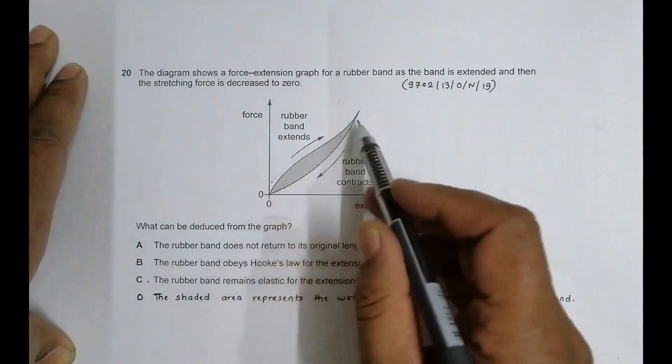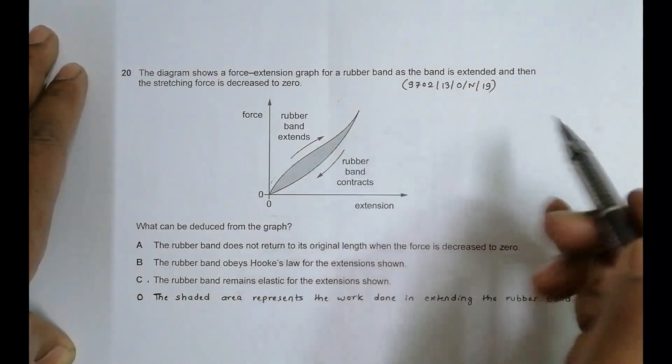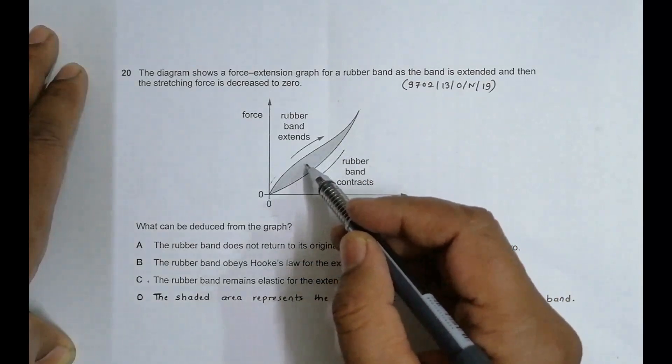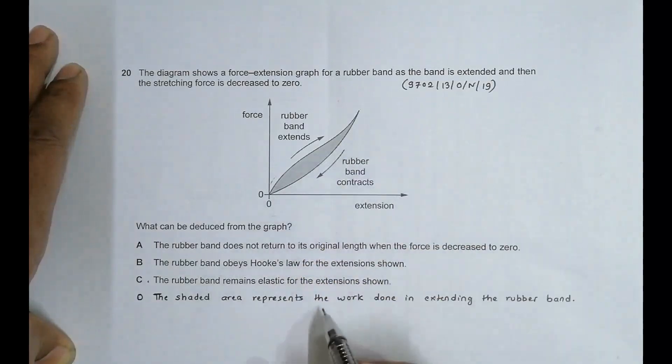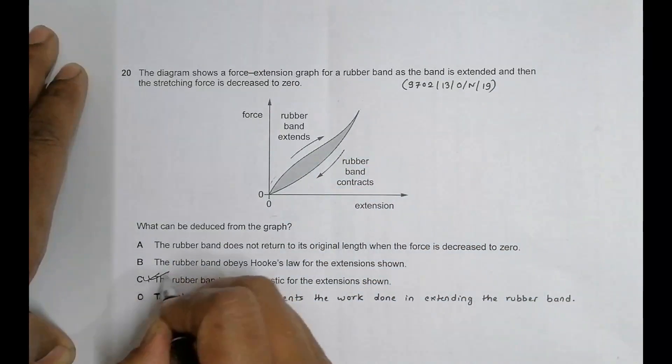This shaded area does not give the work done during extension, that's why this is also not true. So the only true answer becomes number C.